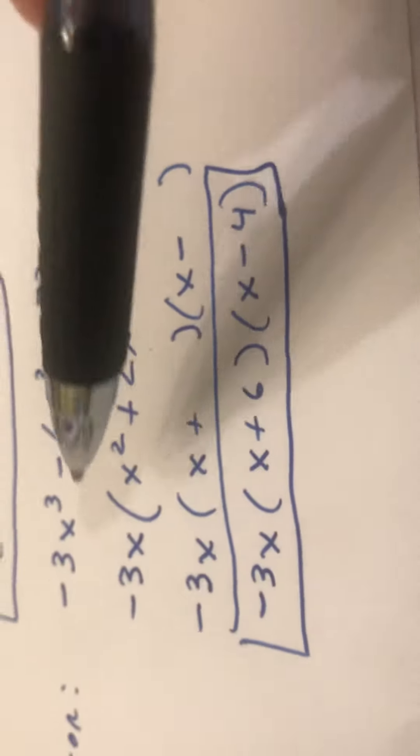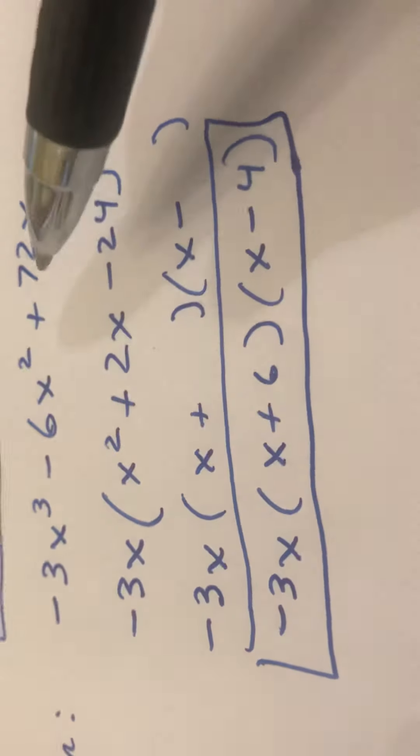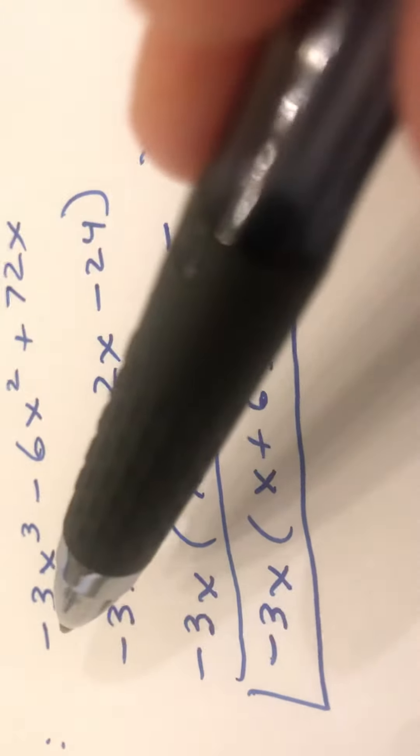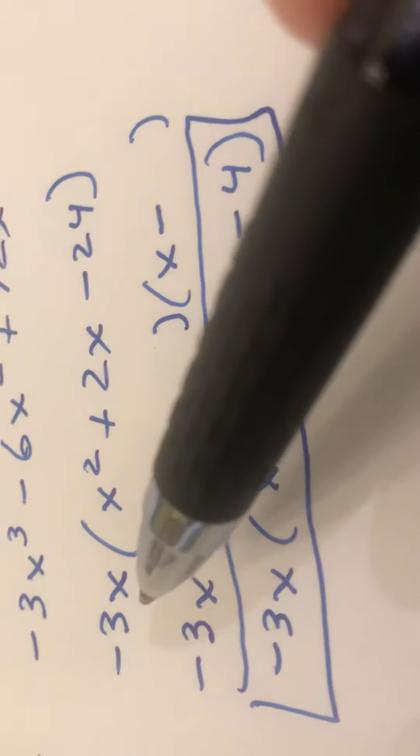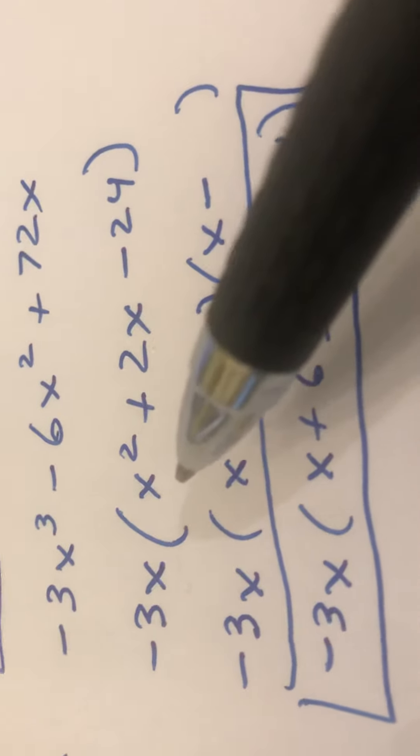Same thing, we need the first term to be positive. So I'm gonna take out a 3 that goes into each and an x that goes into each, but I need this first term to be positive so I'm gonna take a negative 3x out, which gives x squared